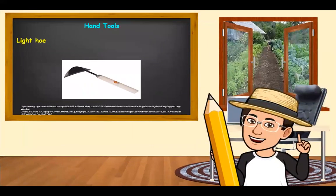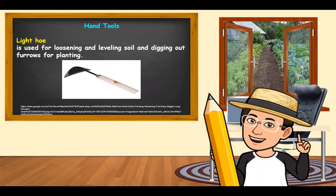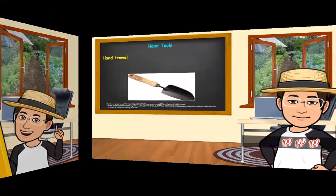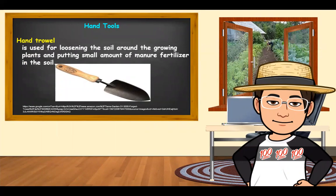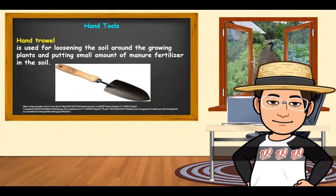Next hand tool is the light hoe. A light hoe is used for loosening and leveling soil and digging out furrows for planting. Next is the hand trowel, which is used for loosening the soil around growing plants and putting small amounts of manure or fertilizer in the soil.